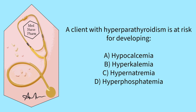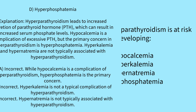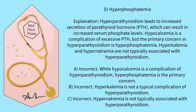A client with hyperparathyroidism is at risk for developing: A) hypocalcemia, B) hyperkalemia, C) hypernatremia, D) hyperphosphatemia. Pause the video and select your answer. The correct answer is D, hyperphosphatemia. Hyperparathyroidism leads to increased secretion of PTH, which can result in increased serum phosphate levels. Hyperkalemia and hypernatremia are not typically associated with hyperparathyroidism.